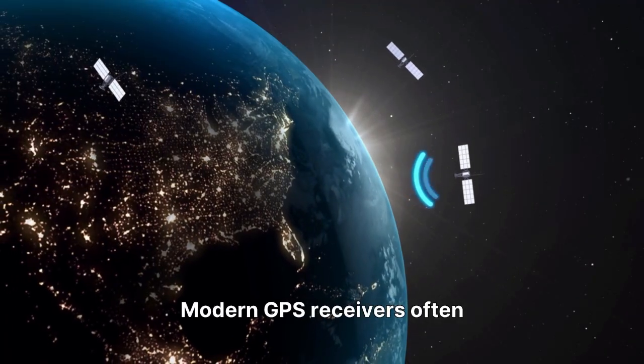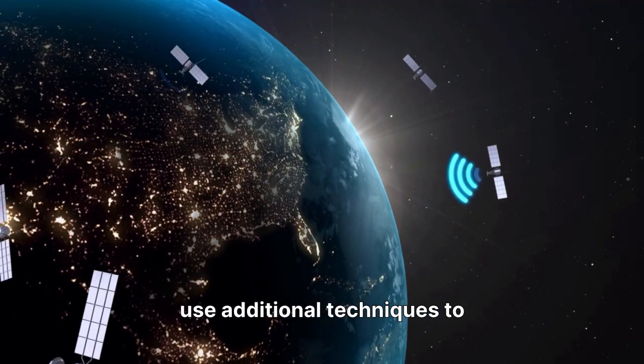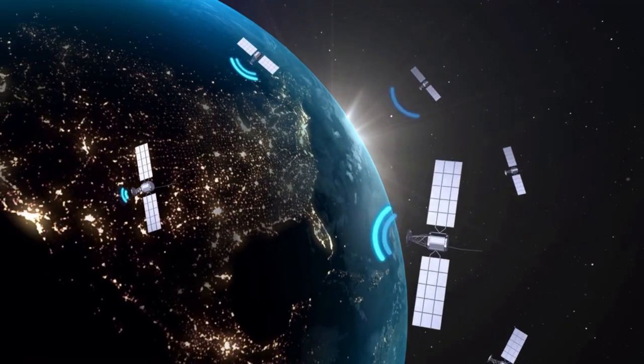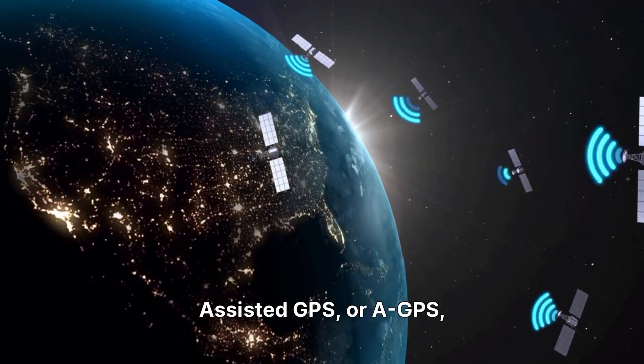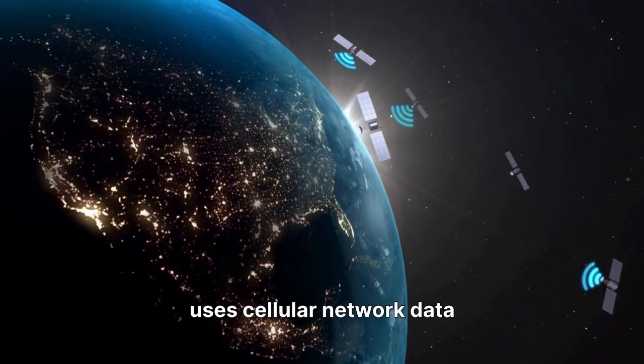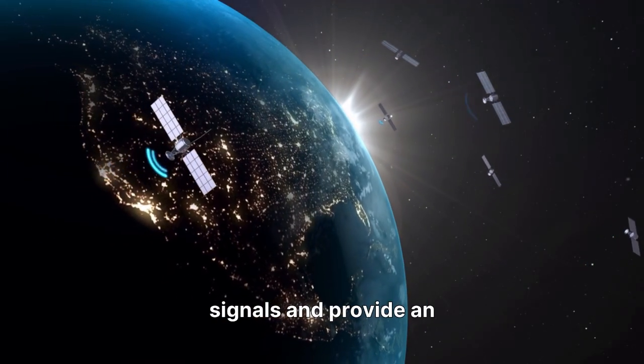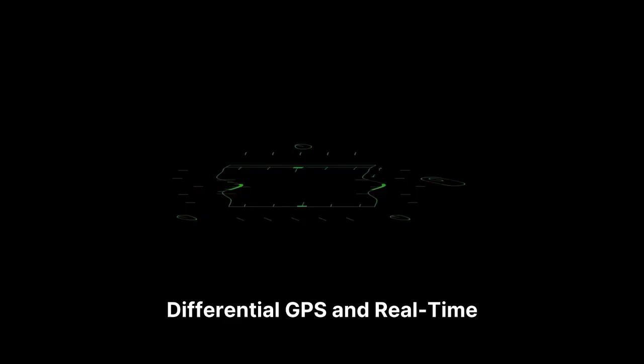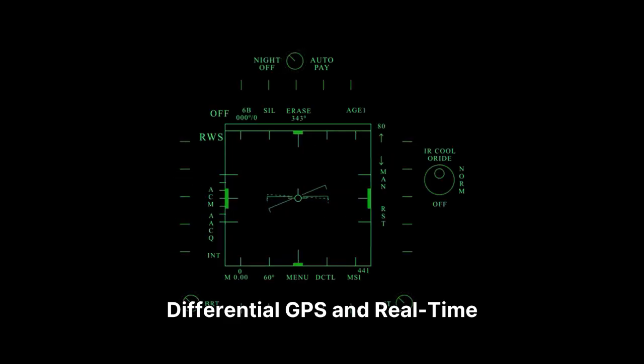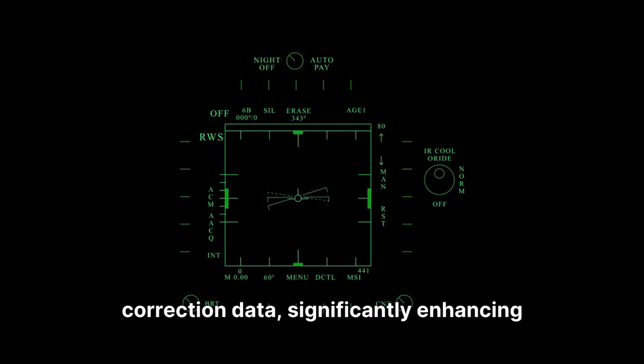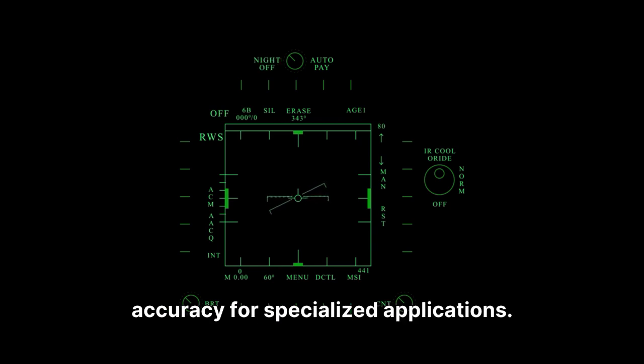Modern GPS receivers often use additional techniques to improve accuracy. Assisted GPS, or A-GPS, uses cellular network data to quickly acquire satellite signals and provide an initial position estimate. Differential GPS and real-time kinematic systems use ground-based reference stations with precisely known locations to broadcast correction data, significantly enhancing accuracy for specialized applications.